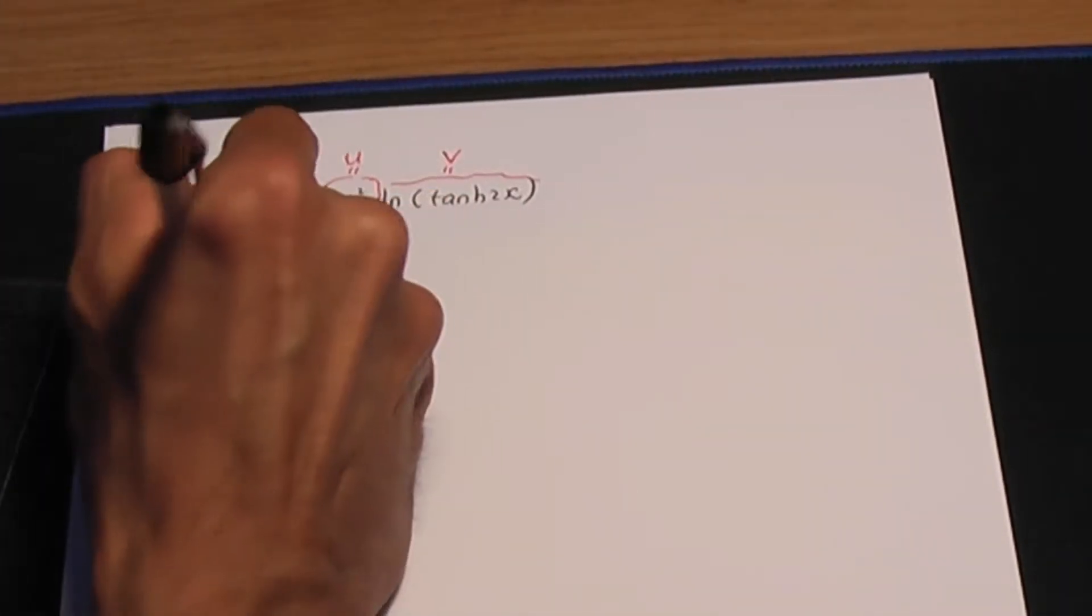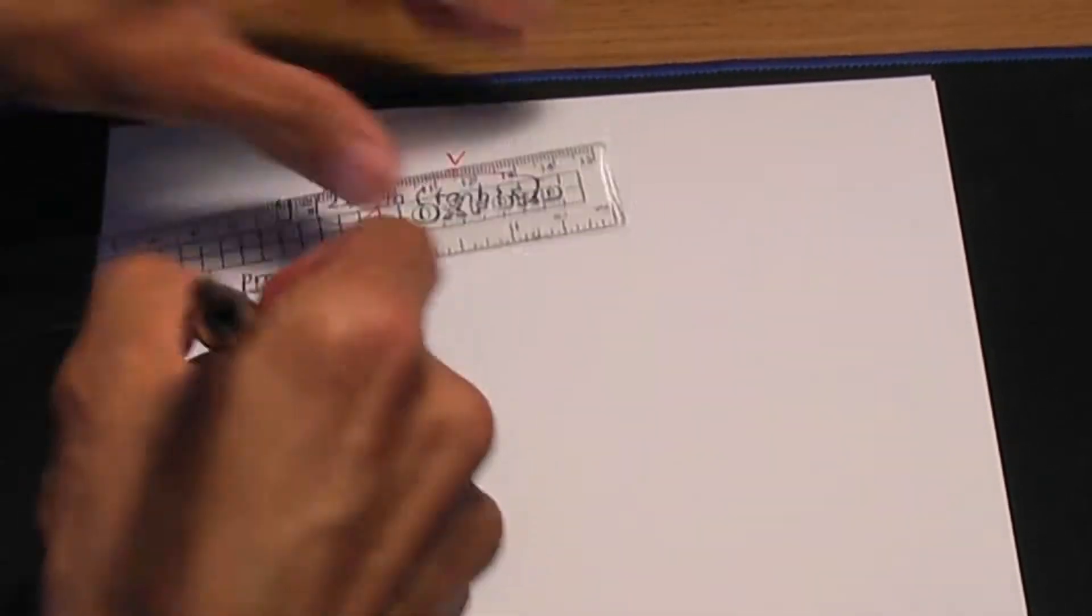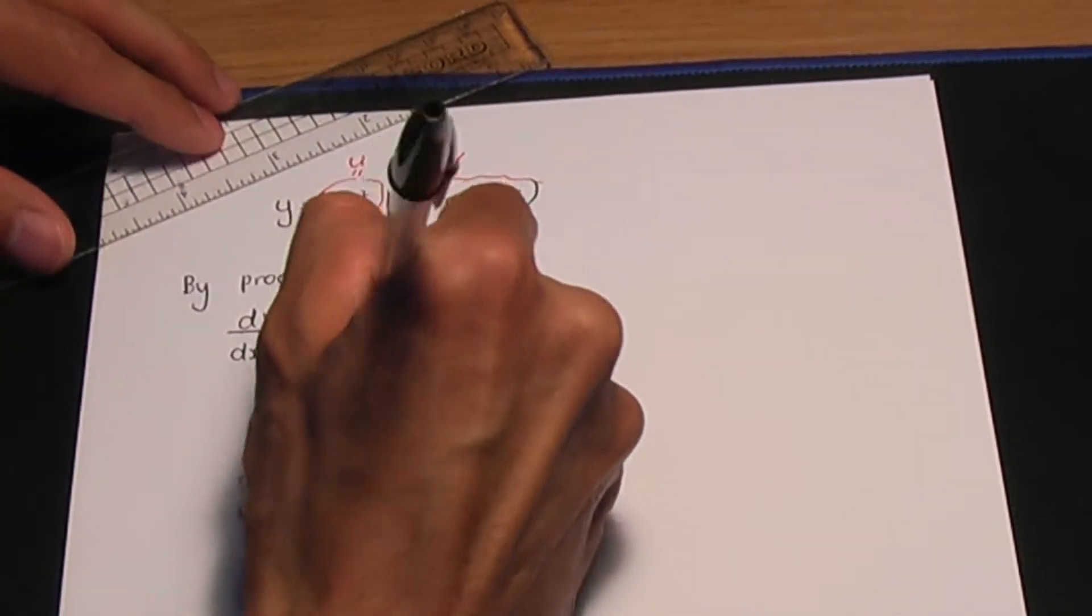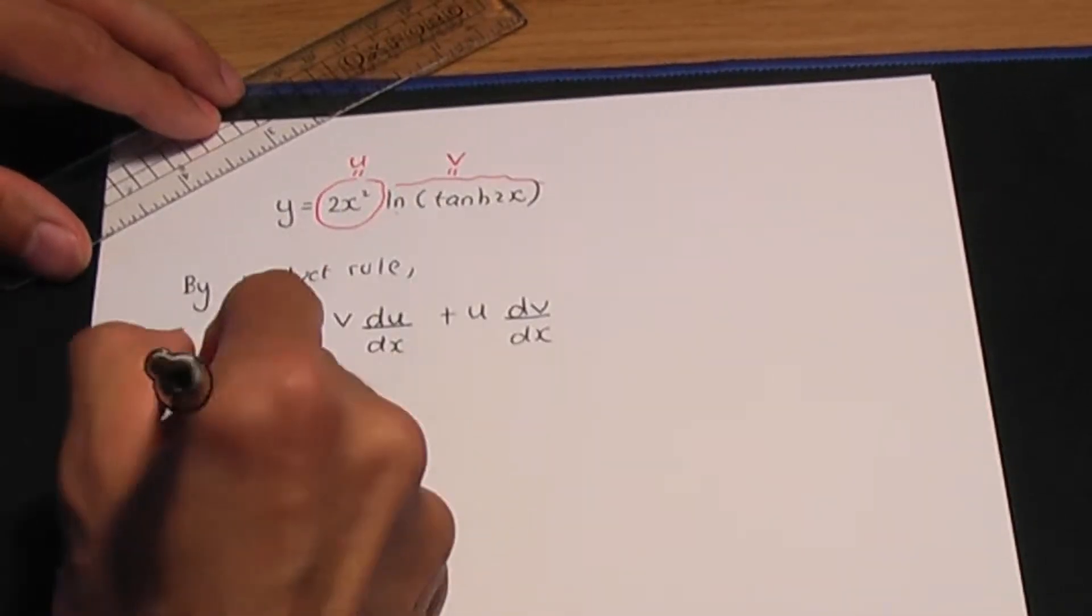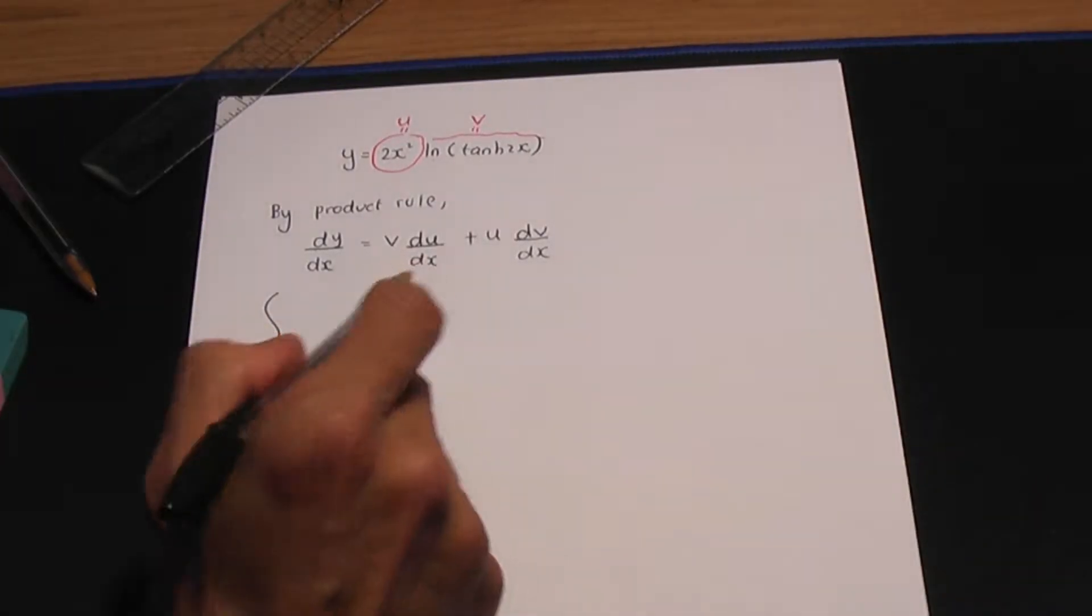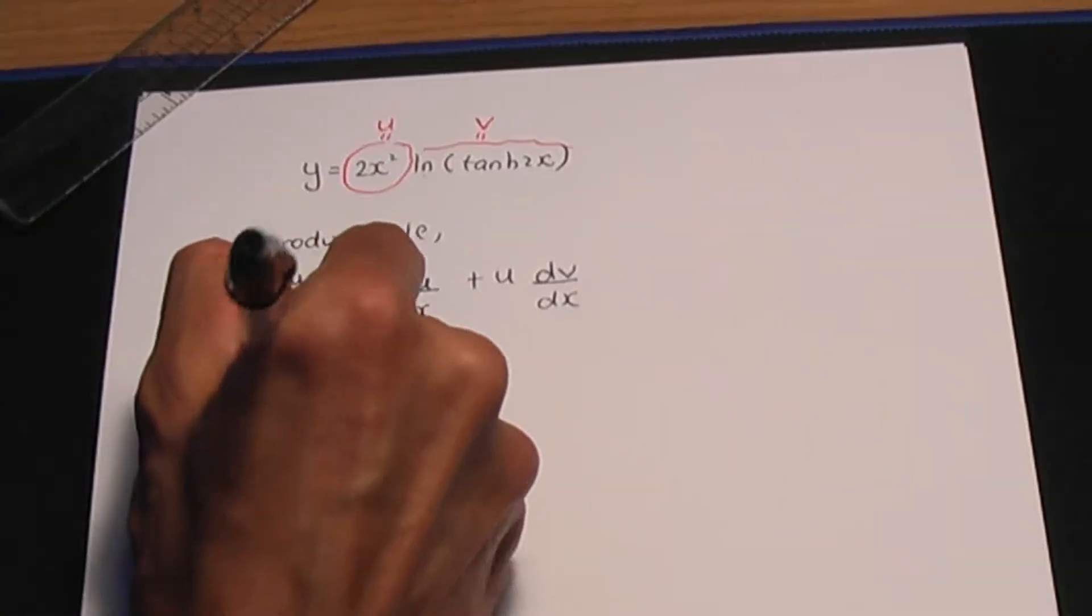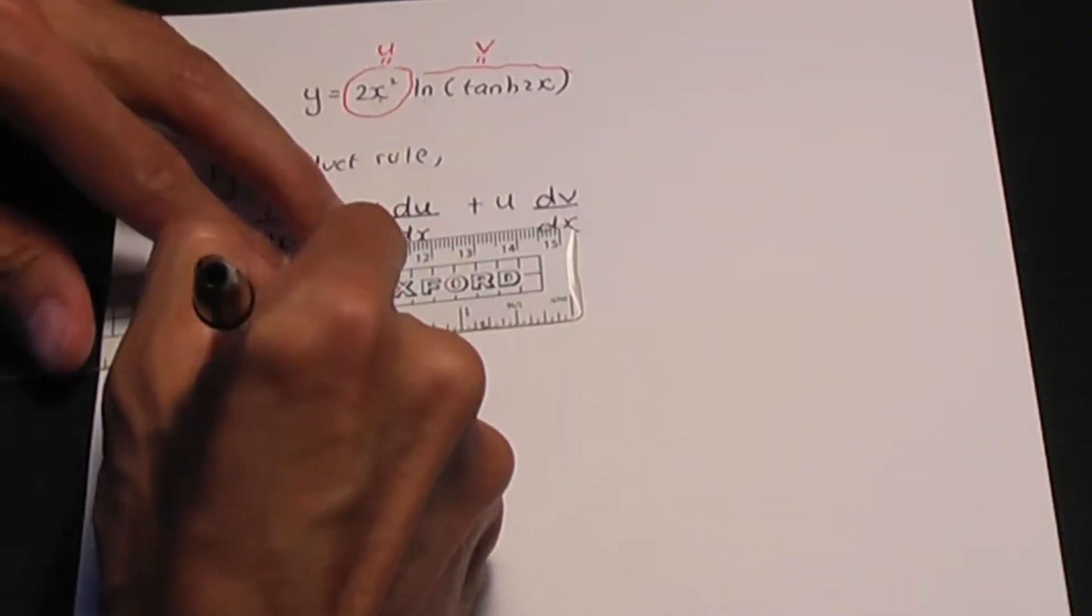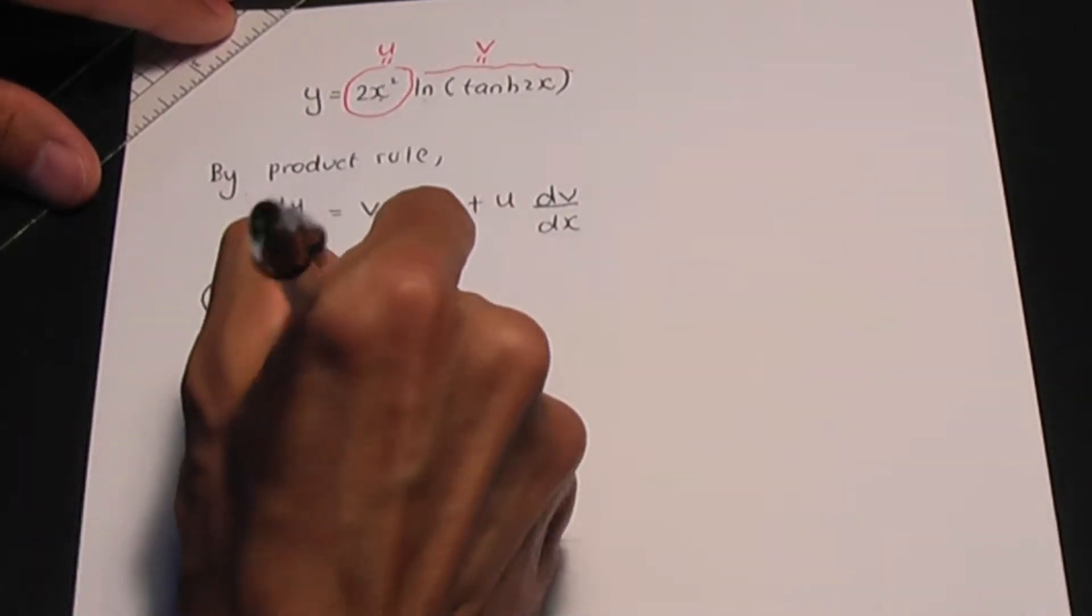So I'm going to use the product rule. Remember by product rule, the result is dy over dx equals v du by dx plus u dv over dx. Let me do a side calculation. Let's calculate du over dx and dv over dx. So u is 2x squared, du by dx, when I differentiate 2x squared that is 4x.